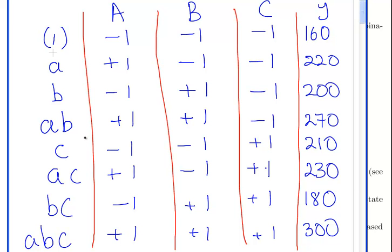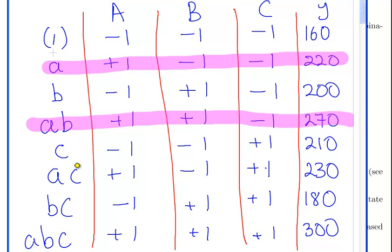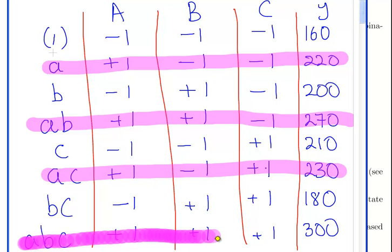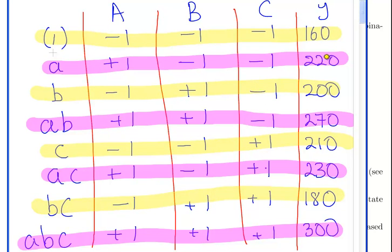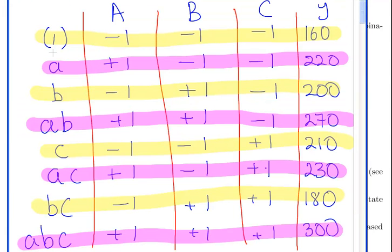What we're going to do is compute the contrast for the main effect A. Where A is high, we're going to add up all those terms. A is high here, here, here, and here. And where A is low: here, here, here, and here. Essentially, the contrast is: where A is high, add up all the values, and then subtract where A is low.